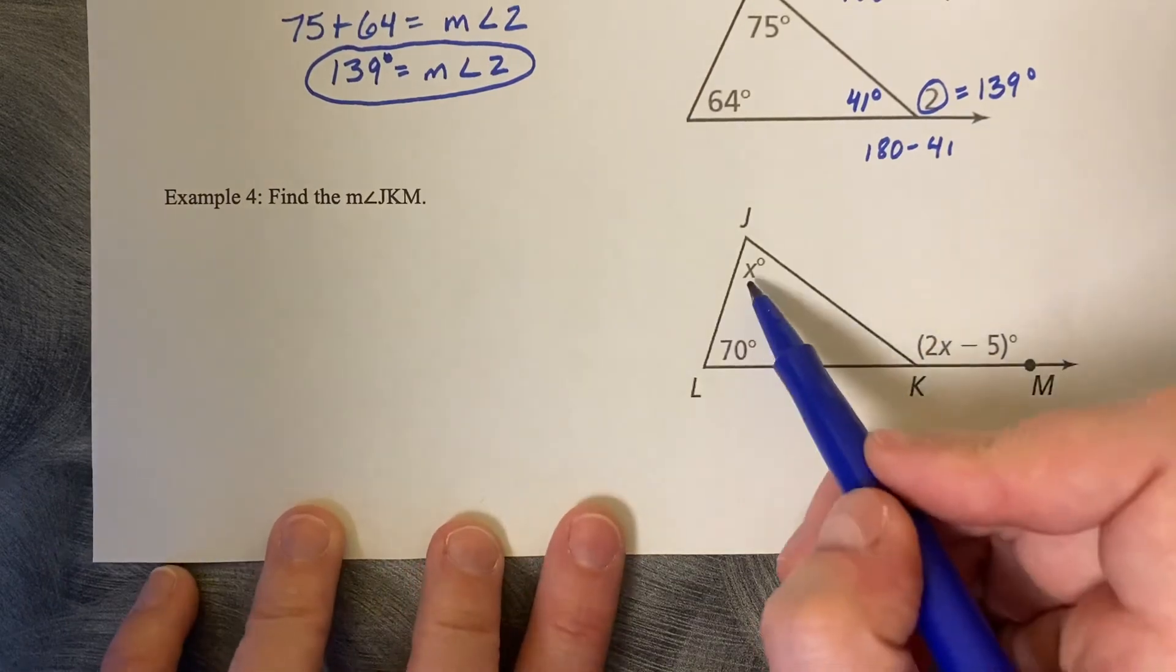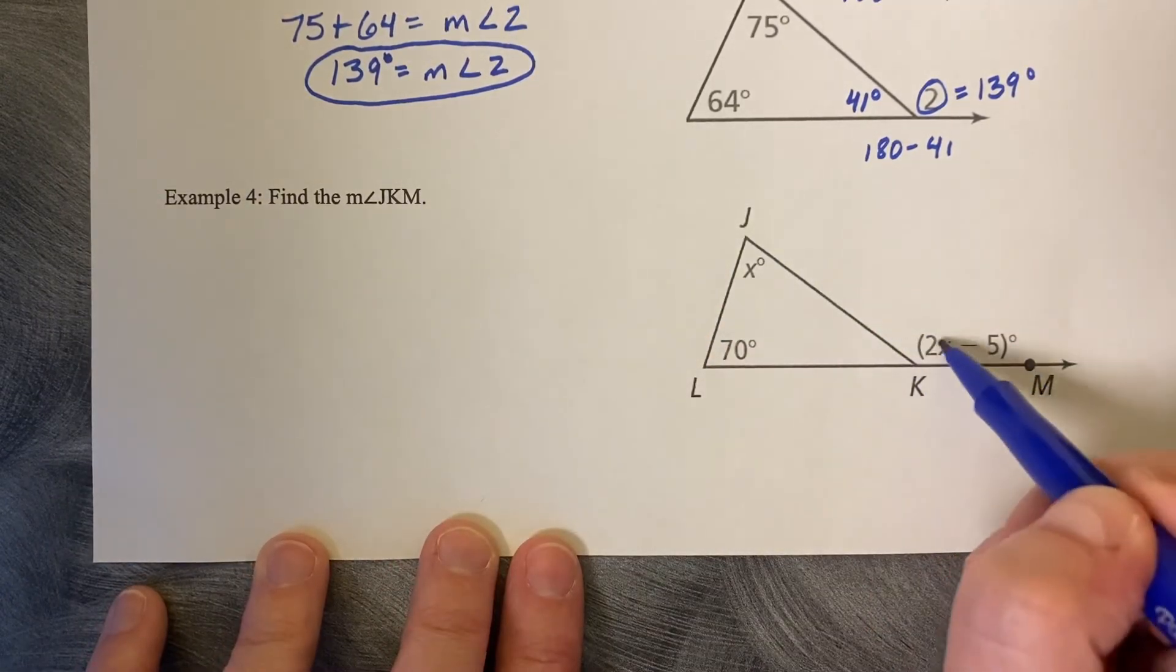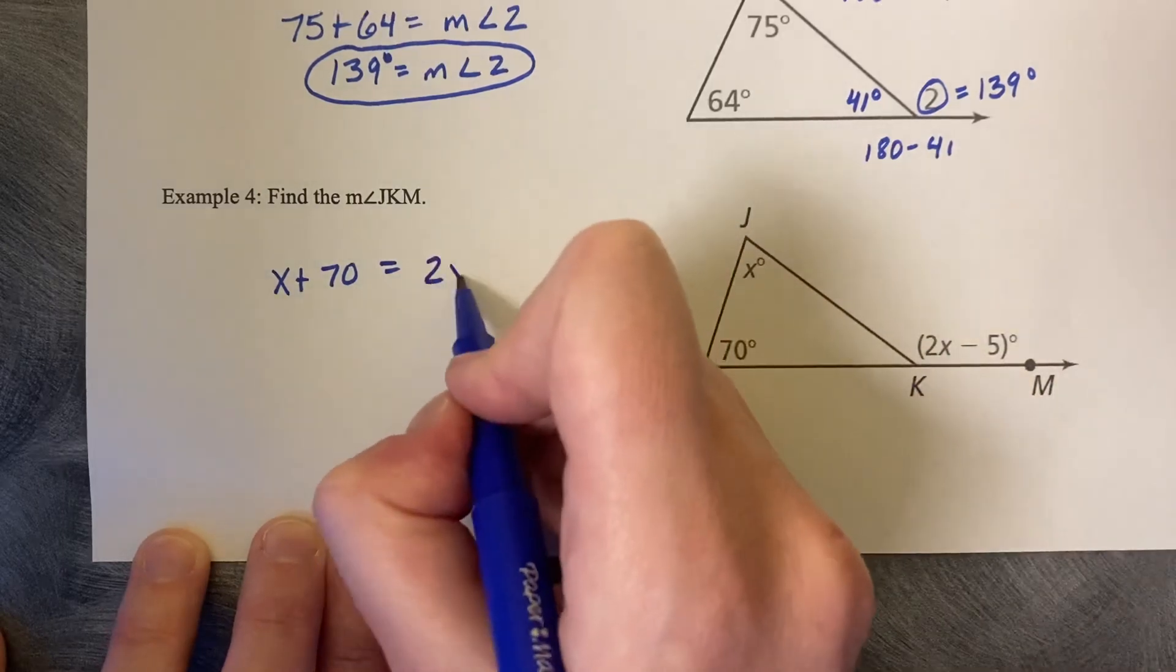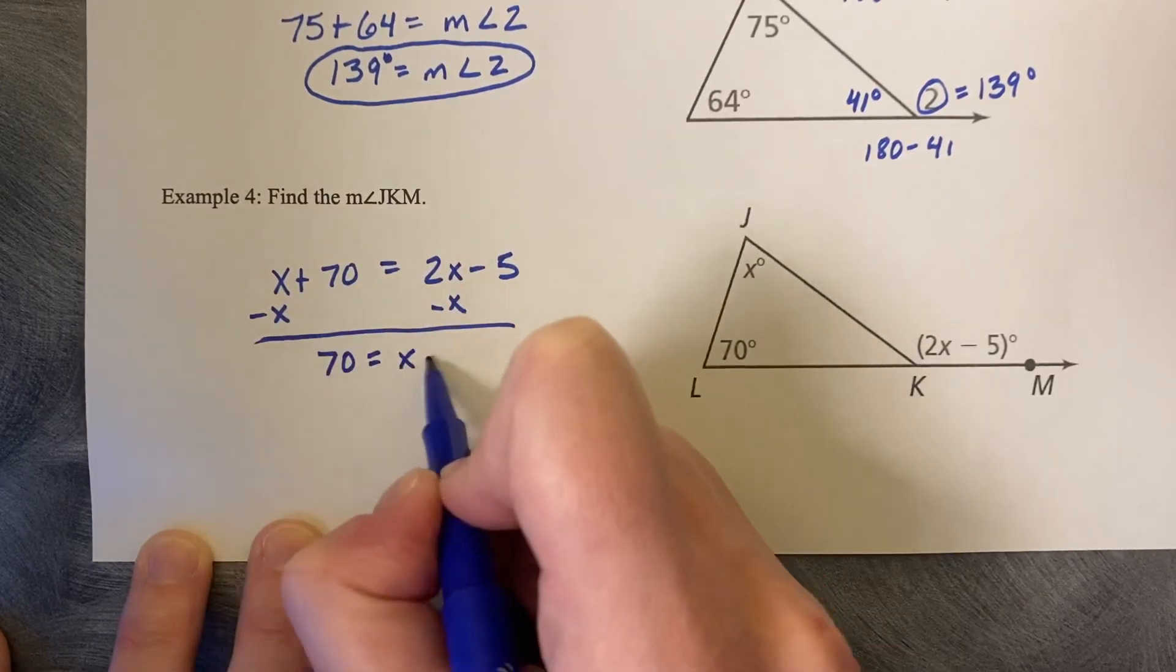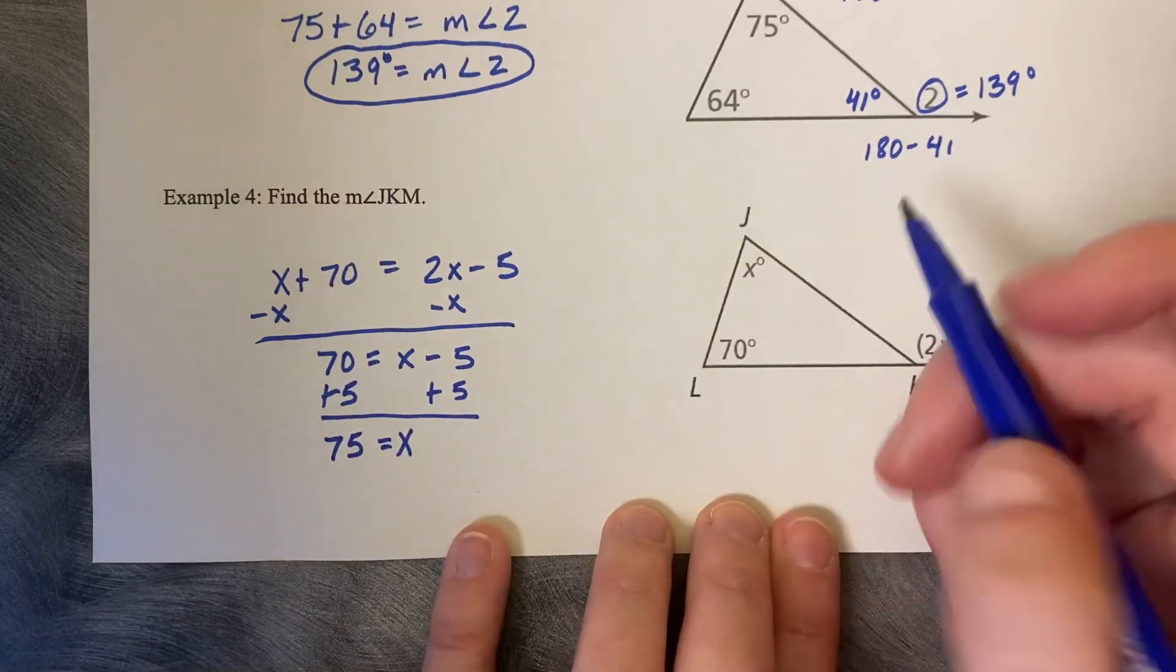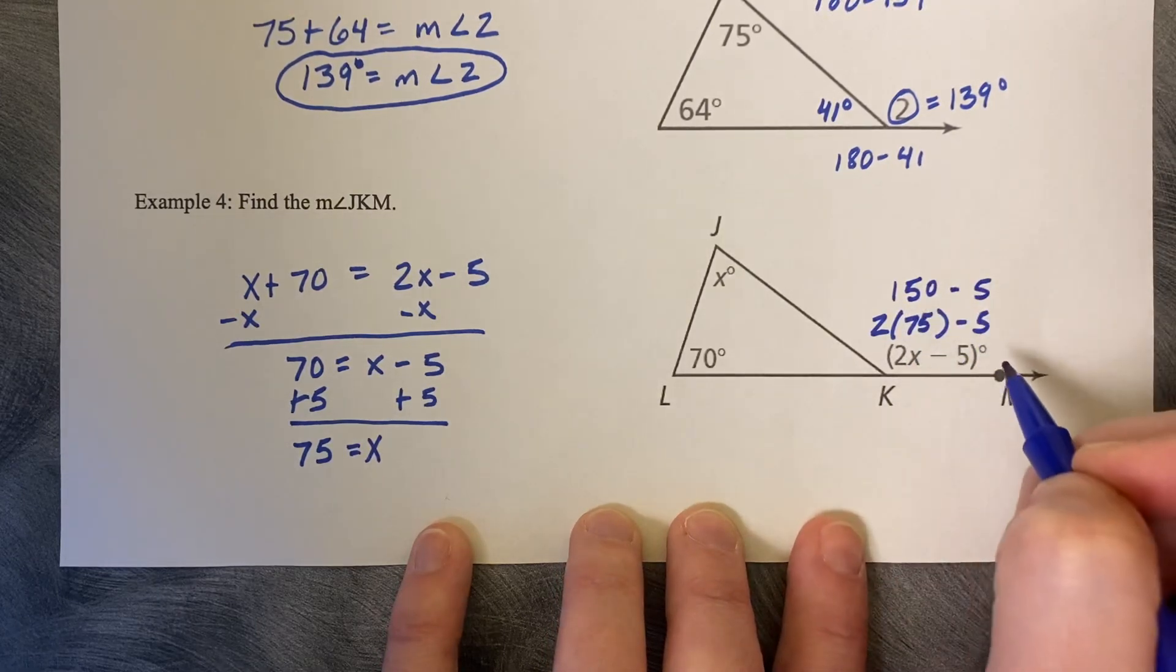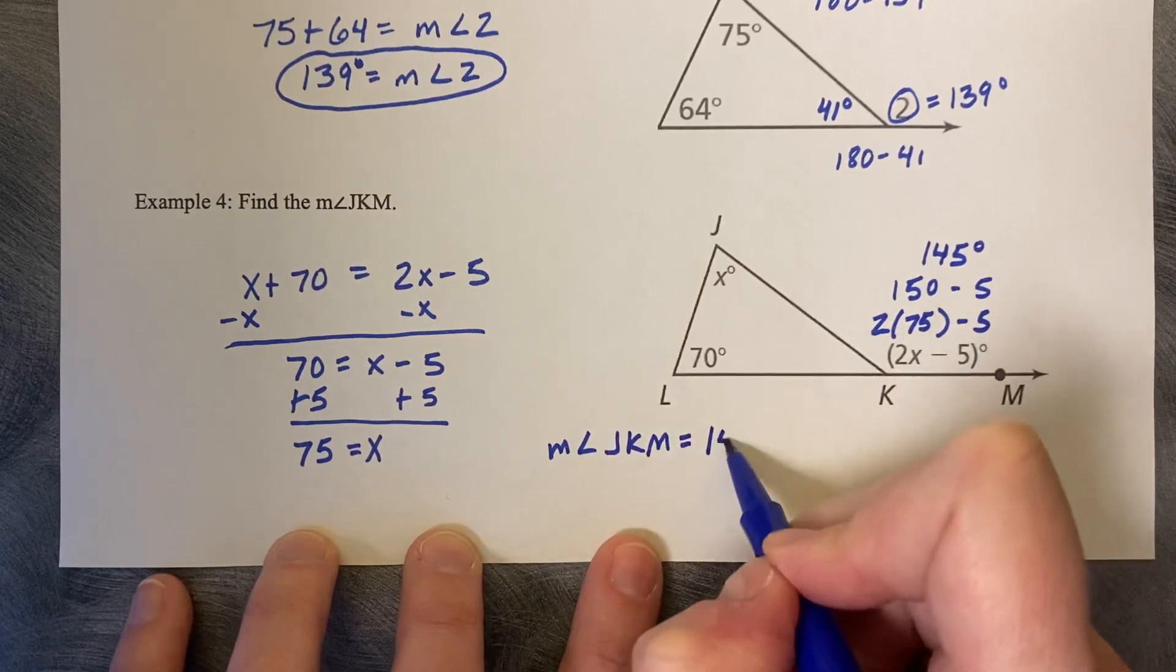Now on a problem like this, you don't have two angle measures to find the third. So you must use this exterior angles theorem. We want to find the measure of JKM, which is that exterior obtuse angle right there. So we're going to follow the pattern, the two non-adjacents, so x plus 70, equals the measure of your exterior, 2x minus 5. And we can solve for x. Subtract x. 70 equals x minus 5 plus 5. So x equals 75. So you could plug 75 in here, subtract it from 180, or you can just plug it into this expression, 2 times 75 minus 5. 2 times 75 is 150 minus 5, so this is 145 degrees. So our measure of angle JKM is 145 degrees.